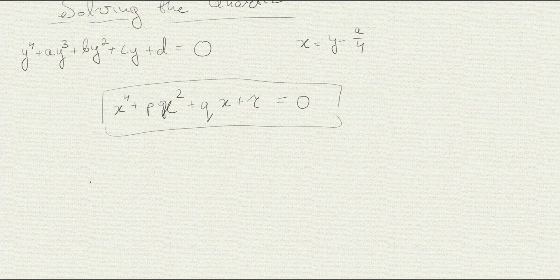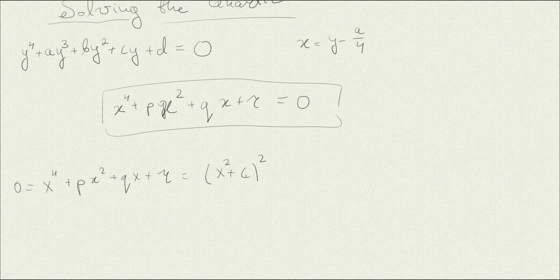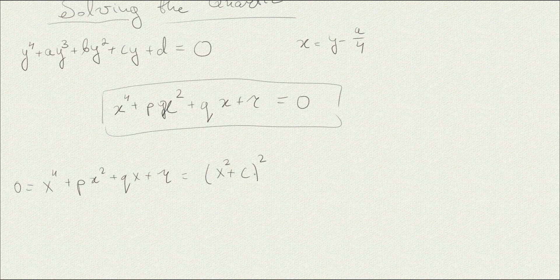What's the intuition behind Ferrari's method? Suppose that we could write the expression x to the fourth plus px squared plus qx plus r as some square, like x plus some constant, all squared. Wouldn't it be nice? It would be terrific, because then we could take the square root and solve for x. But of course, this is too naive — it means the fourth-order equation has two doubled roots, which cannot work in general.